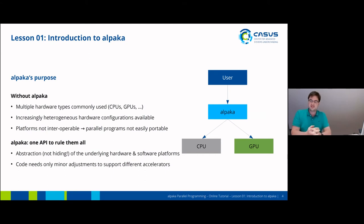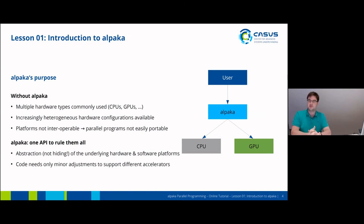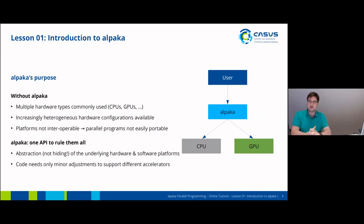Today's hardware landscape is quite heterogeneous. You have CPUs available, you have GPUs available, and all of this makes the system layout quite complex. These different hardware platforms are not interoperable, which means that a program you write for a GPU, for example, won't be easily portable to a CPU. It will require a lot of effort to port a CUDA program to a parallel CPU program. With Alpaca, you have one API to rule them all — an abstraction layer over the underlying hardware and software platforms.